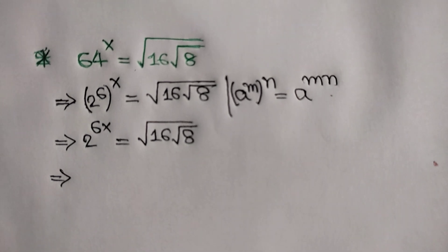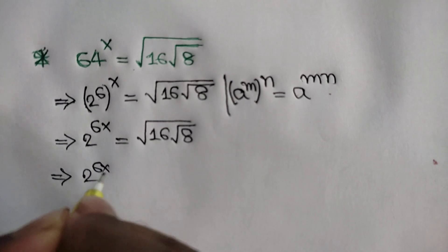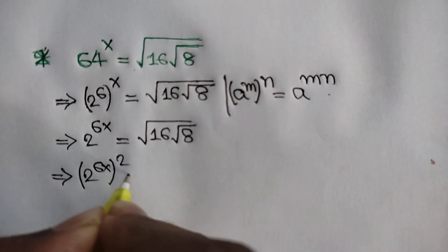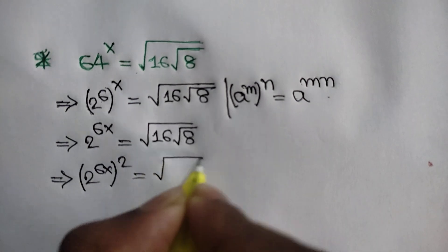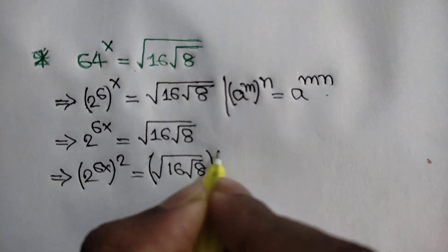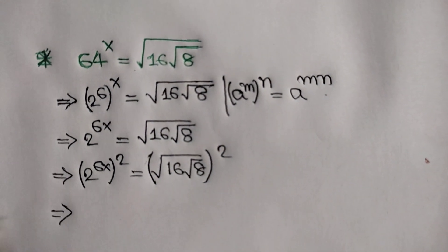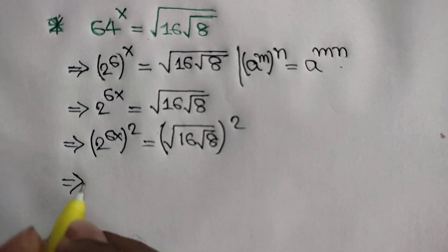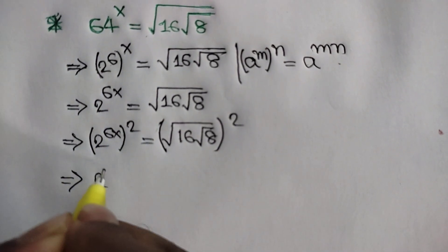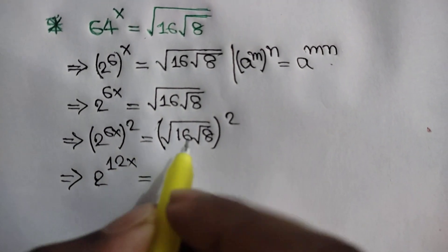Now, squaring both sides, we can write 2 to the power 6x, whole to the power 2, is equal to the square root of 16 times the square root of 8, whole to the power 2. Here we can write 2 to the power 6 times 2, which means 2 to the power 12x.